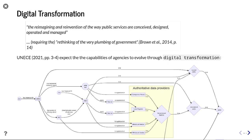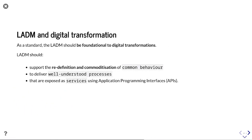This will require not just the effective sharing of information between agencies, but the demonstration of trust and credibility between each of those different agencies. This requires digital transformation — the reimagining and reinvention of the way that public services are conceived, designed, operated, and managed — a rethinking of the very plumbing of government. LADM should be foundational to these digital transformations and should support the redefinition and commoditisation of common behaviour to deliver well-understood processes exposed as services using APIs.